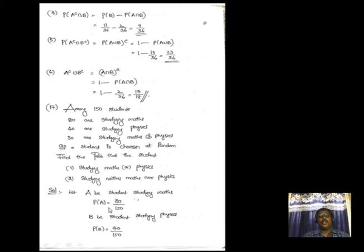Next problem: Total students = 150. P(A) = 80/150 (studying maths), P(B) = 40/150 (studying physics), P(A ∩ B) = 30/150 (studying both). Using the addition theorem, P(A ∪ B) = P(A) + P(B) − P(A ∩ B) = 3/5. The probability of studying neither maths nor physics is P(A′ ∩ B′) = 1 − P(A ∪ B) = 2/5.